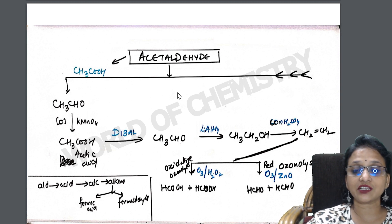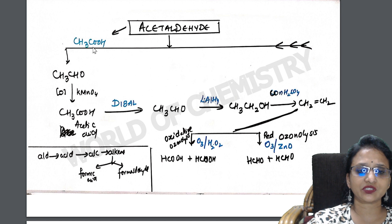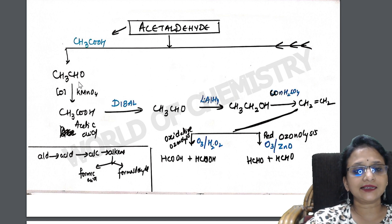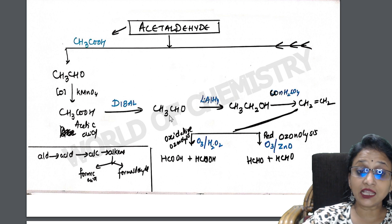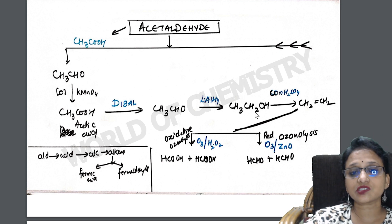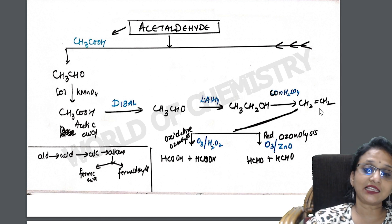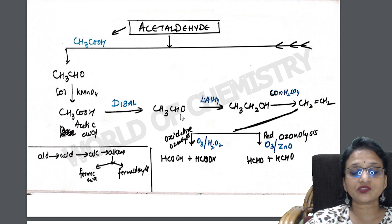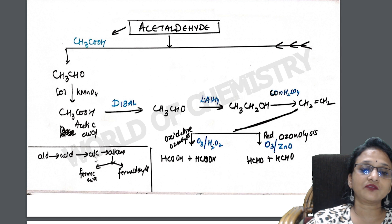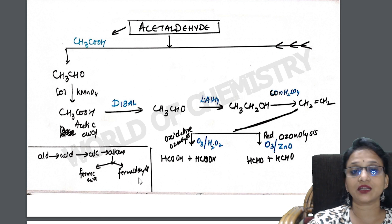Acetaldehyde conversions — there are six important ones. Acetaldehyde on oxidation gives acetic acid. Acids using Debal's reduction can be converted back to aldehydes. Aldehydes on reduction give primary alcohols. Primary alcohols with a dehydrating agent give alkenes. From alkenes: reductive ozonolysis gives formaldehyde; oxidative ozonolysis gives formic acid. All together in one page: aldehyde → acid → alcohol → alkene → formic acid/formaldehyde.